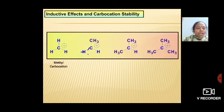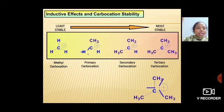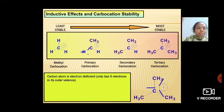Inductive effects and carbocation stability. Tertiary carbocations are more stable than secondary, which is more stable than primary, which is more stable than methyl carbocation, because in tertiary carbocation, there are three methyl groups which release electrons towards C+, making it more stable.